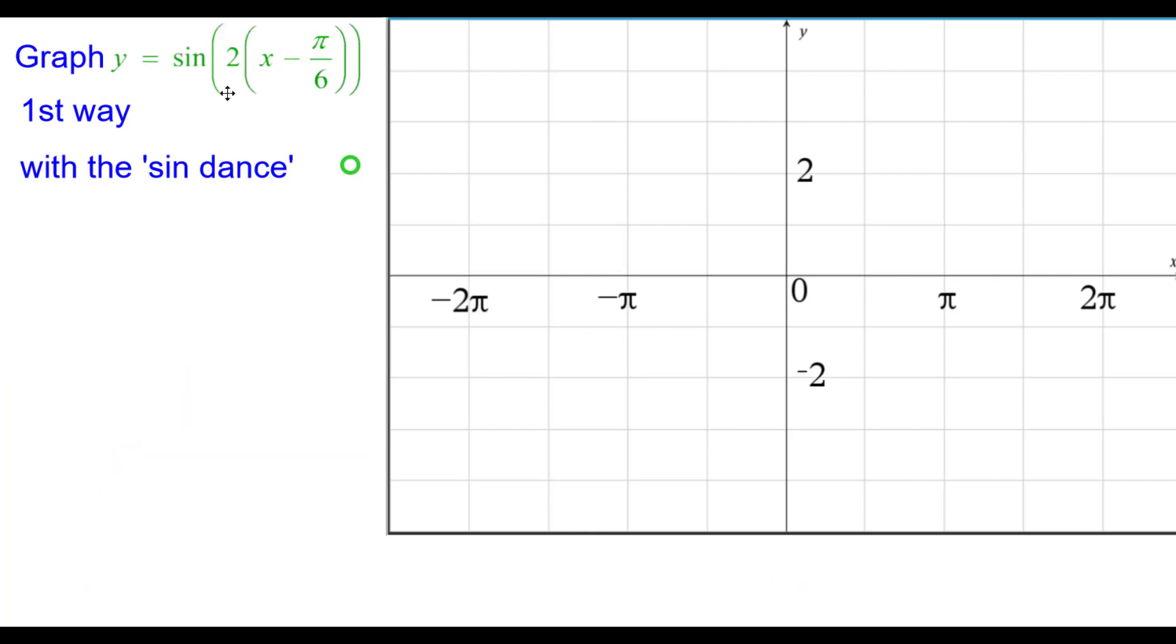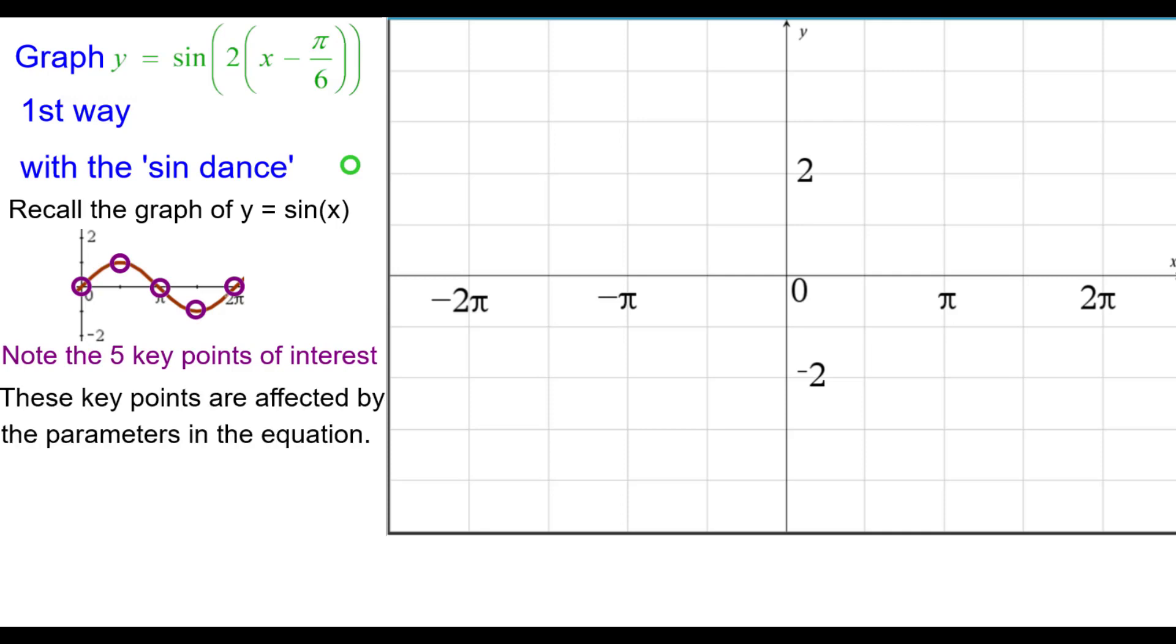So rewriting it in this form, we recall the graph of the sine function and the five key points of interest. These key points and all points are affected by the parameters in the equation, and there are two of them.